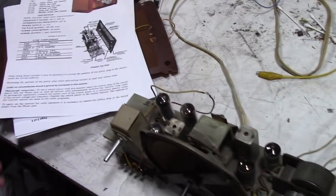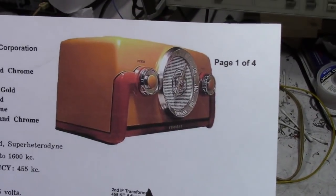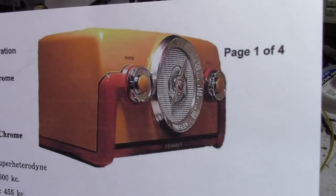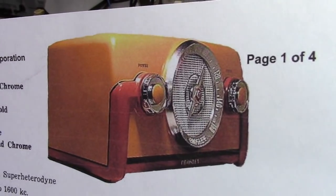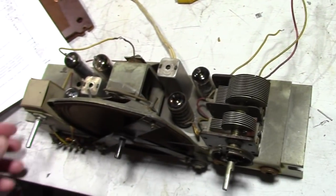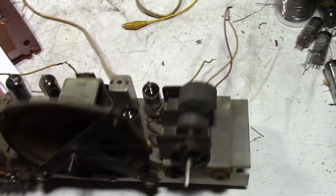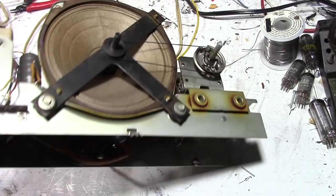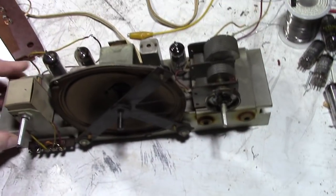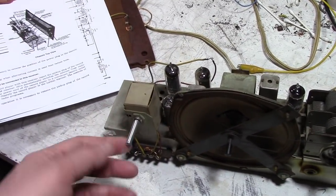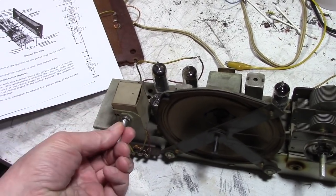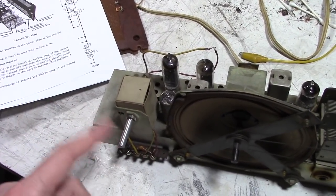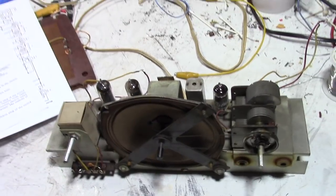So what it is, is a Crosley 10-137, also known as the Dashboard, because it kind of looks like a car dashboard. Conventional All-American 5, and I recapped it. Very straightforward. Good condition. Except the power switch volume control has been replaced, but they did a decent job, and the control is good, so it shouldn't be an issue.